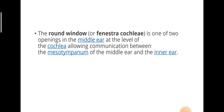Round window, also called the fenestra cochlea, is one of two openings in the middle ear at the level of the cochlea, allowing communication between the mesotympanum of the middle ear and the inner ear.